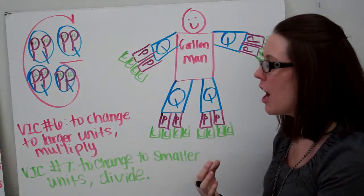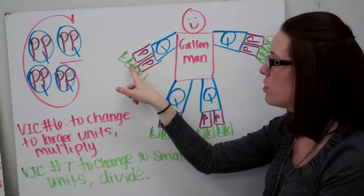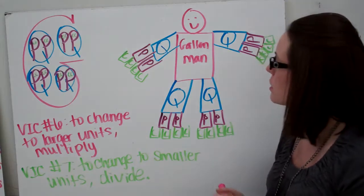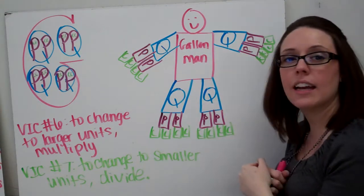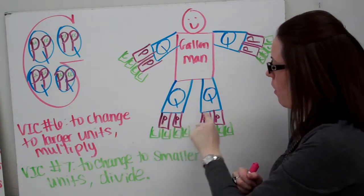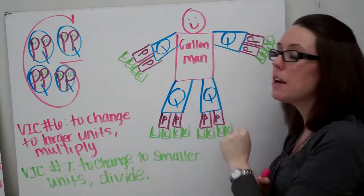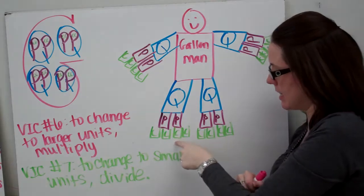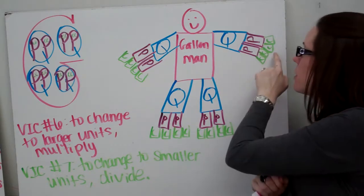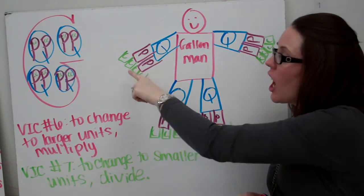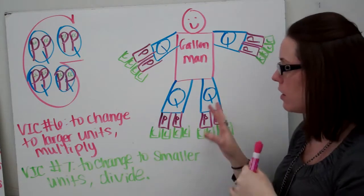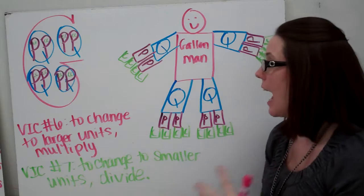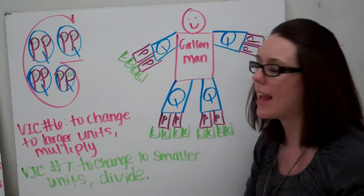How many cups are in a pint? Two cups are in every pint. You can also use it this way: there are four quarts in a gallon, eight pints in a gallon, and sixteen cups in a gallon. So you can use this to see how many pints, cups, and quarts are in gallons, quarts, cups, and pints.